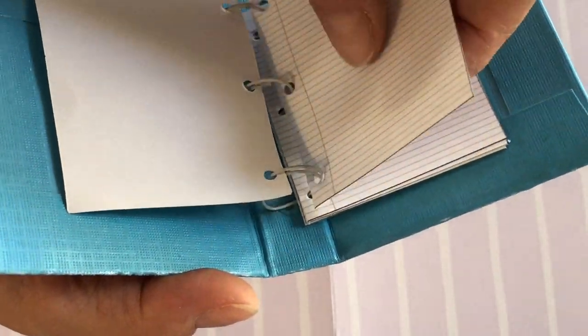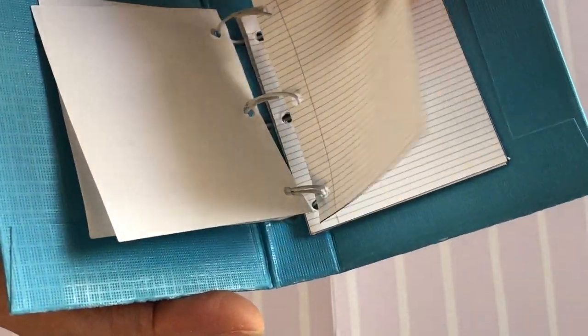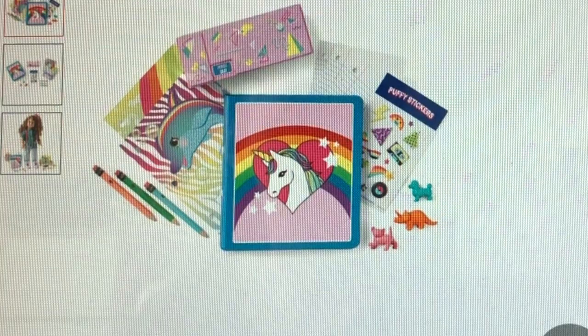Carefully open the wire loops to thread on your paper. For the front of the binder, screenshot the unicorn image.